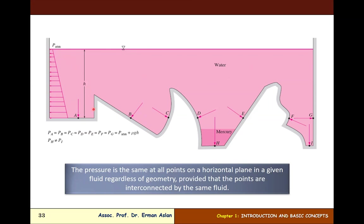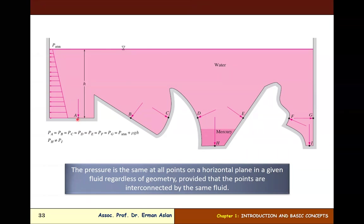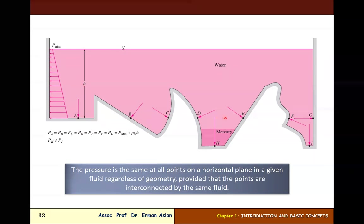We look at points A, B, C, D, F, and G. All seven points are at the same height H, therefore P_A = P_B = P_C = P_D = P_F = P_G, and each equals P_atm plus density times gravitational acceleration times depth H.